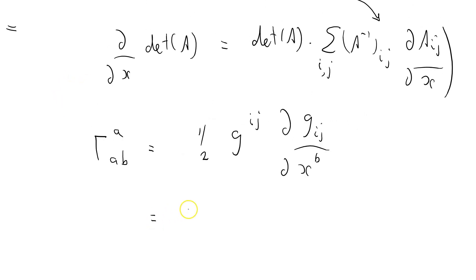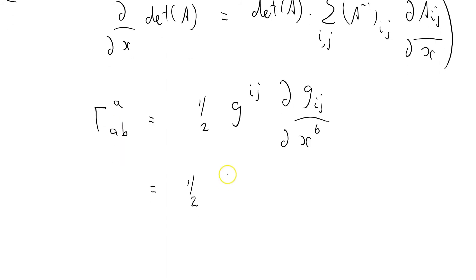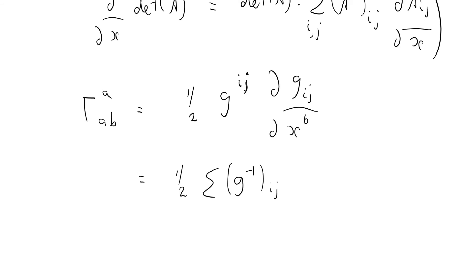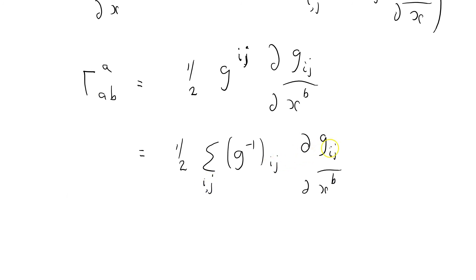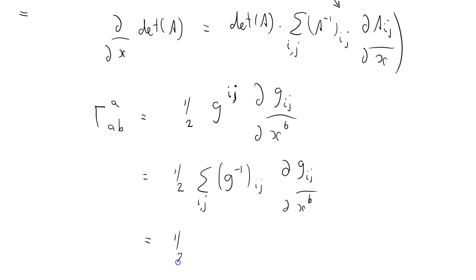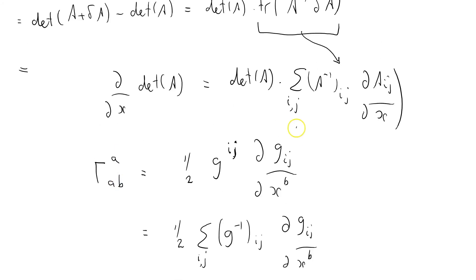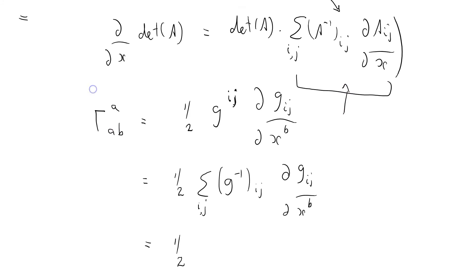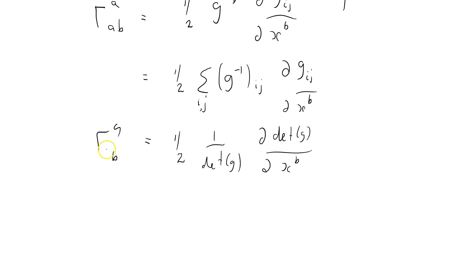So I'm going to rewrite that. That's equal to a half sum g to the minus 1 ij, because you'll remember that the inverse metric tensor here with superscripts equals the matrix inverse of the g tensor with subscripts, times di g downwards ij by di x b over i and j. Summed over i and j because we've got a superscript and a subscript. Well, that equals a half... Well, it's this thing here. It's this thing here. 1 over the determinant of the matrix g, just taking that det over the other side, times di det g by di x b.